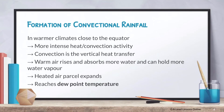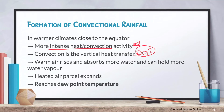So how does convectional rainfall actually form? In warmer climates near the equator, there is more intense heat and convectional activity. What happens is that warm air rises, and this warm air can absorb and hold more water vapor. As a result, this heated air parcel will expand — hot air rises.